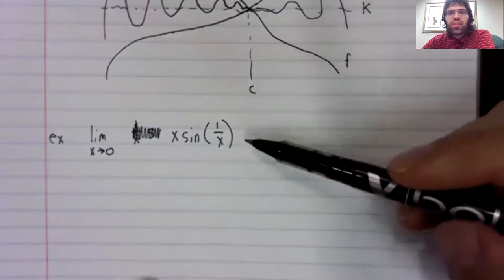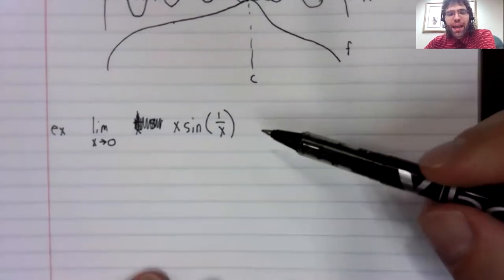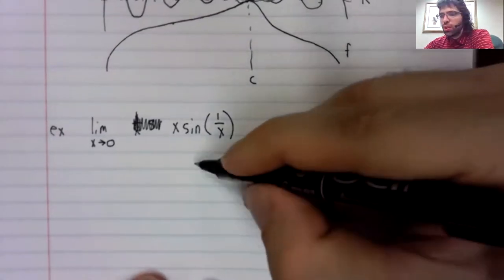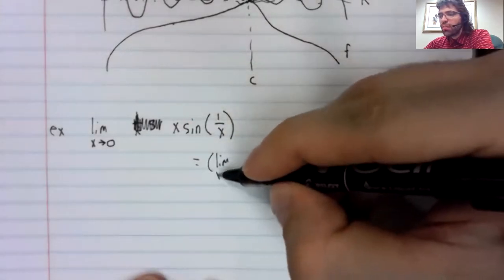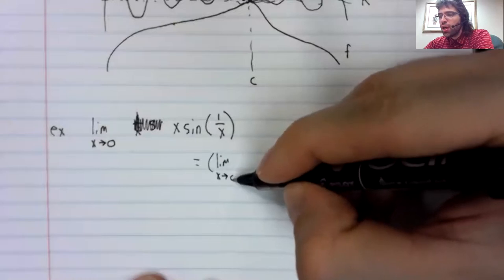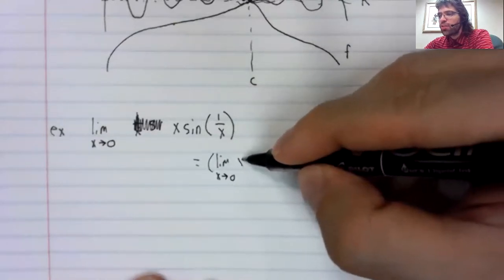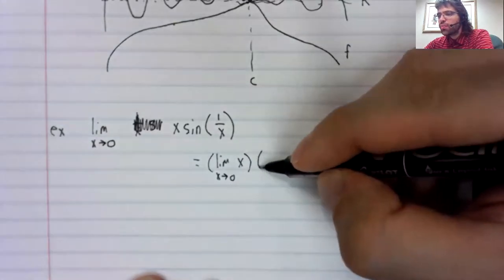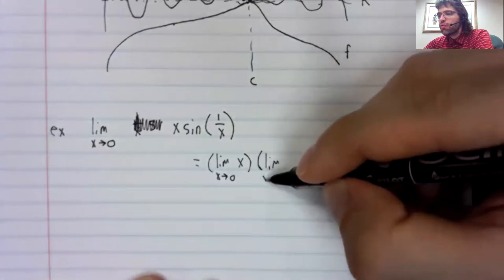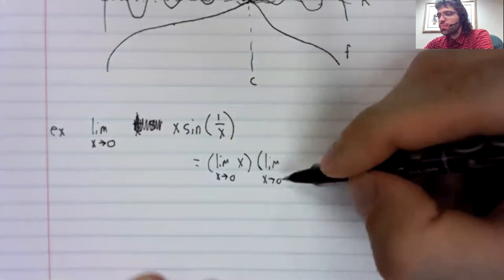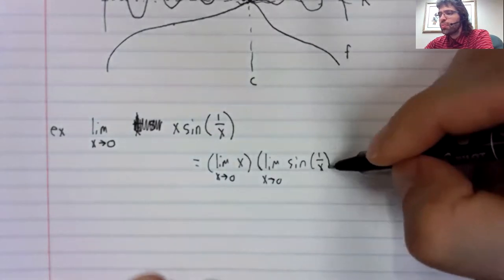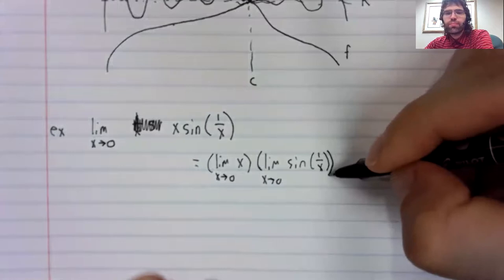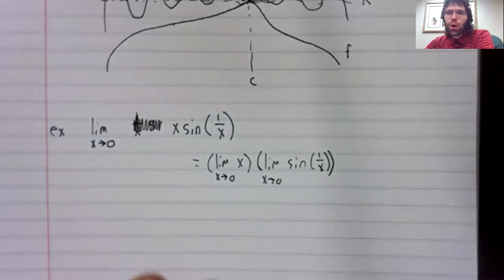And let me start by saying what you can't do. Your first instinct might be to say, oh, we have the limit of a product. Let's rewrite that as the product of the limit. That doesn't work.